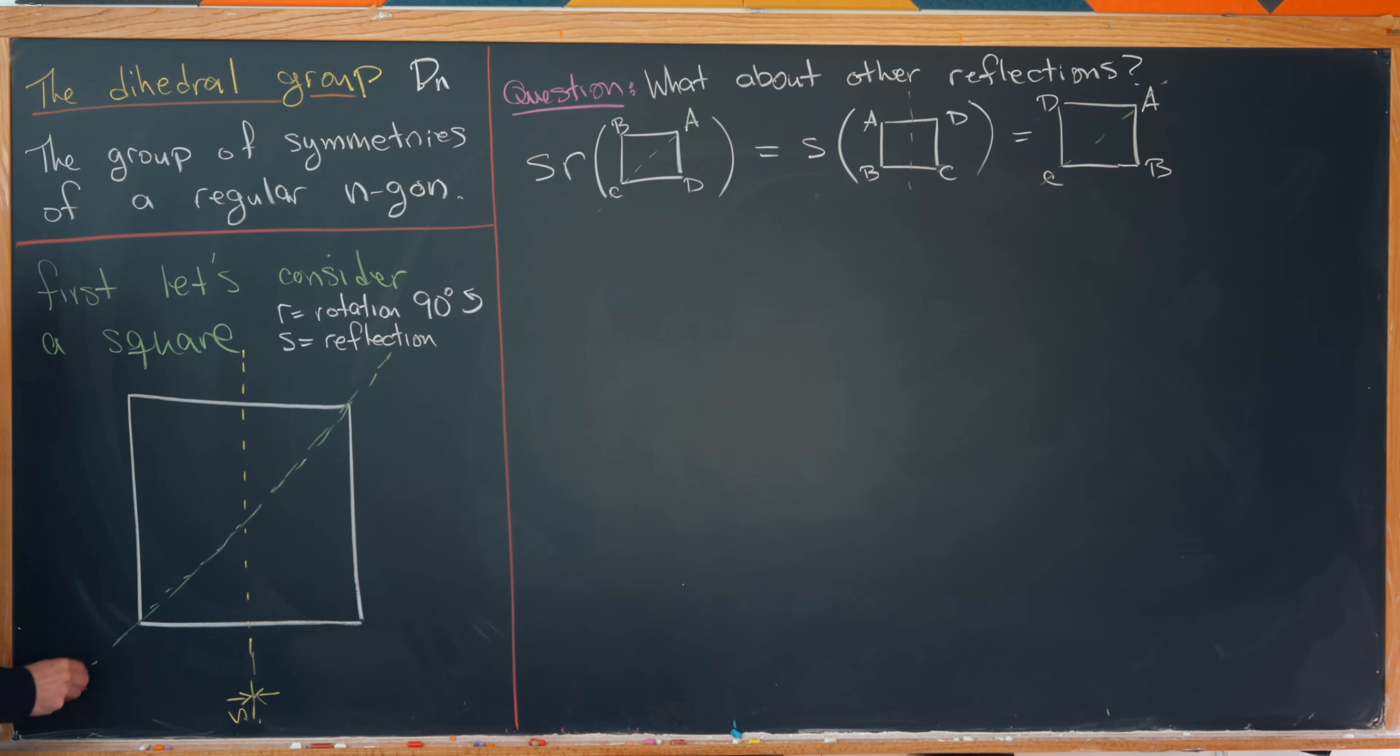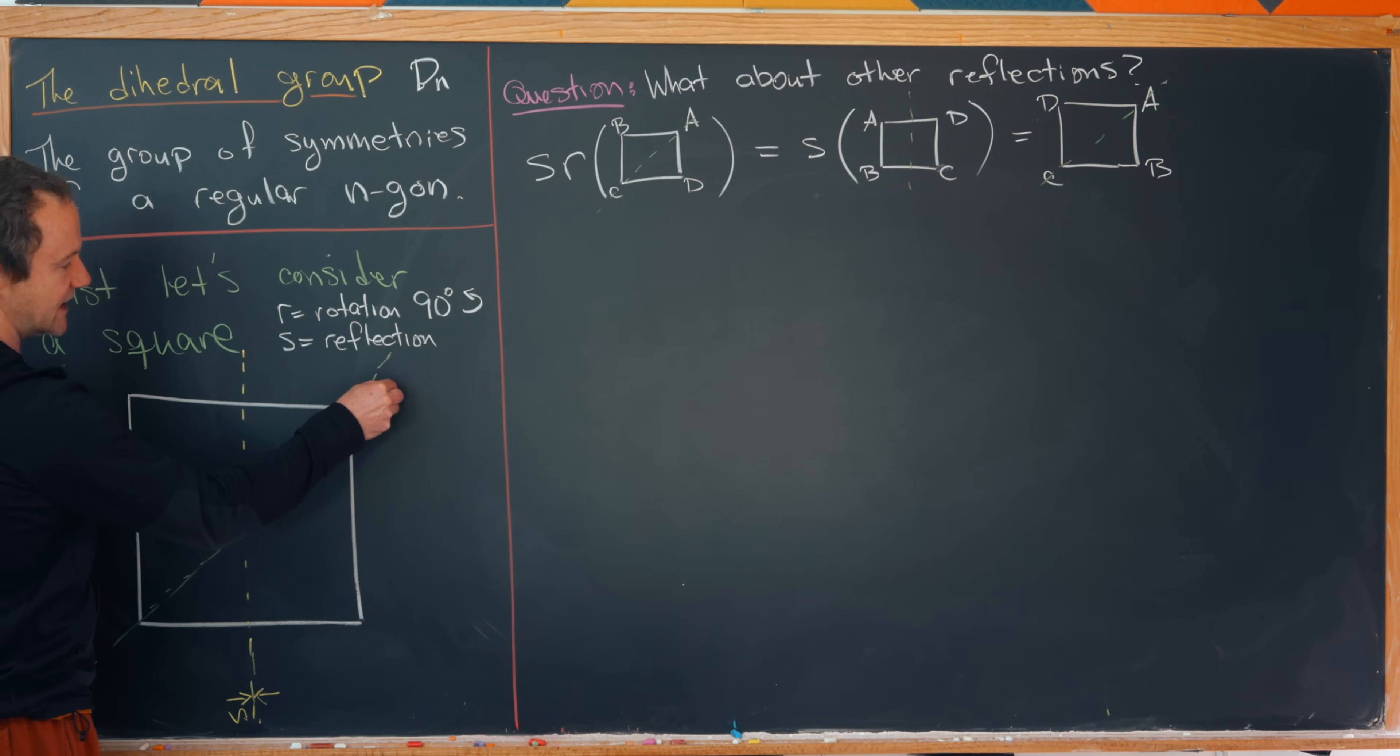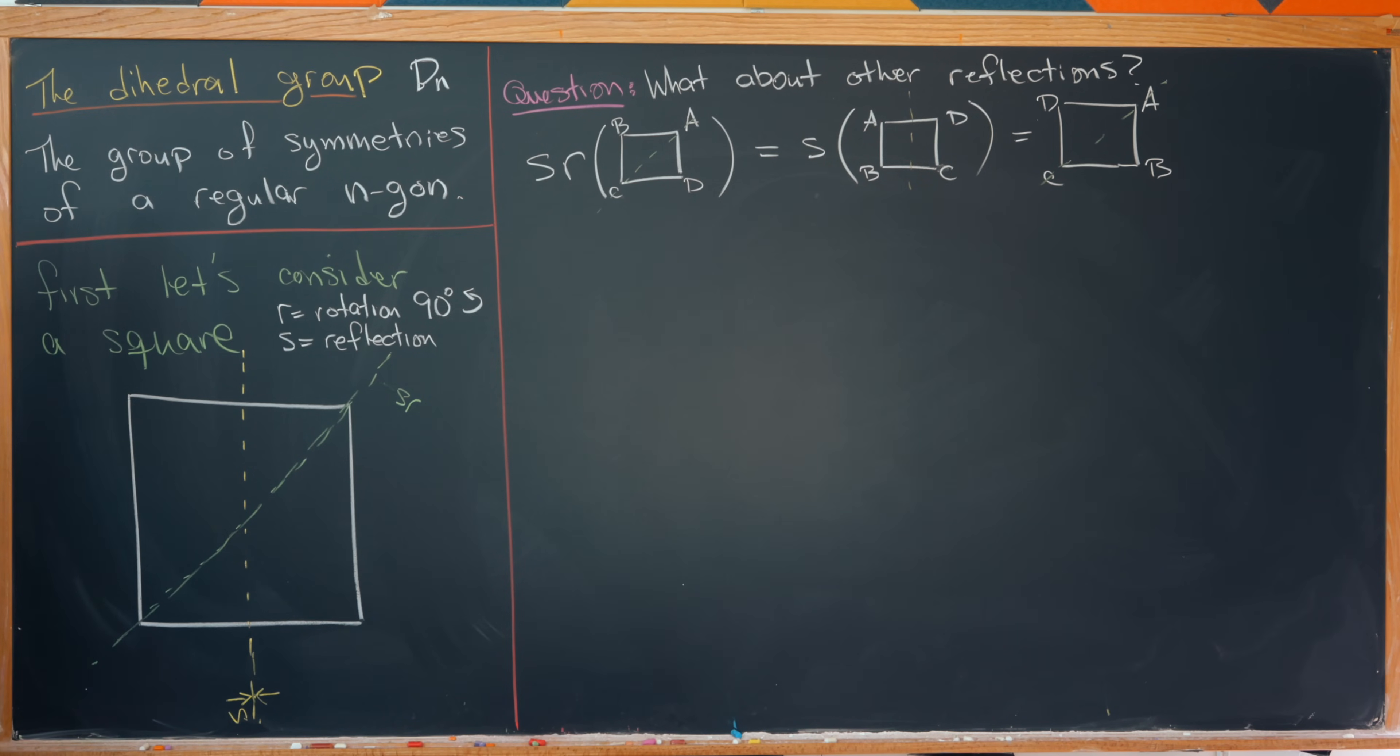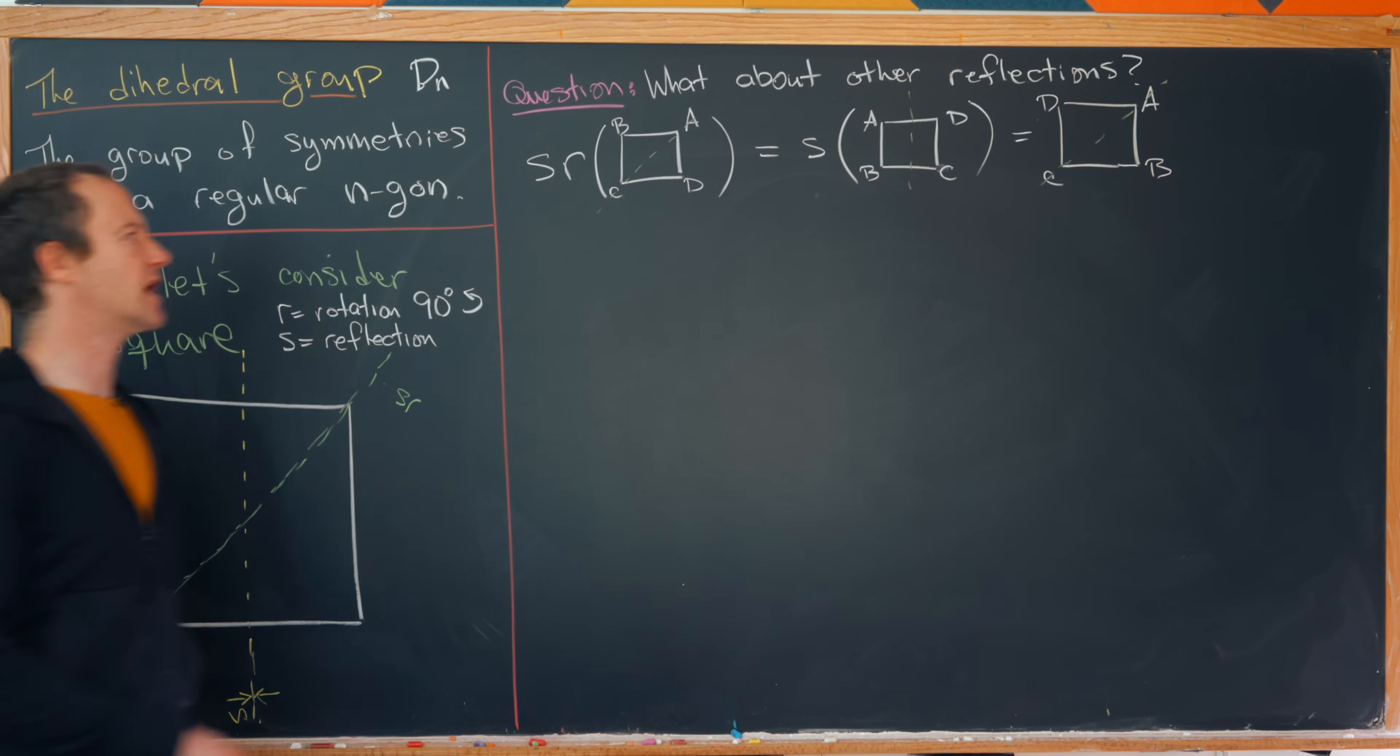But now we'd like to put that in terms of reflection about a certain axis over here. Let's compare the input with the output. Let's notice that a and c are fixed, whereas d and b have been swapped. So this is in fact like reflection about this diagonal axis. So let's put this diagonal axis in here like this. So this green axis is exactly the reflectional axis given by s composed with r.